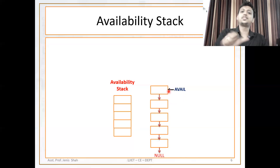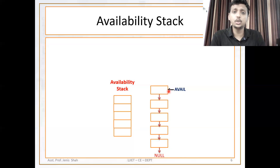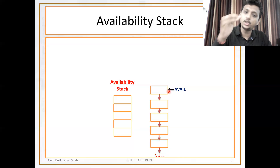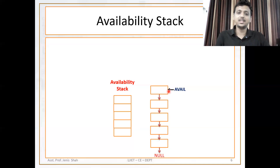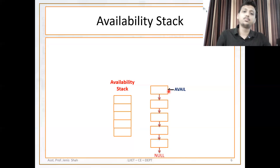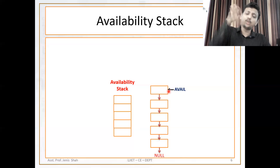There is no possibility of decrementing the avail pointer. So what you need to do is move your avail pointer to the next node. Up to this point, it should be clear what the availability stack is and how it works. Let us now move forward to how we can get a node from the availability stack.